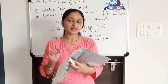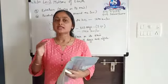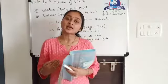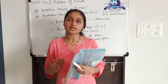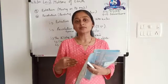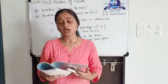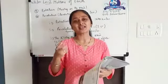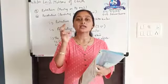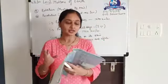Thus, seasons in the northern and southern hemispheres are opposite. When it is summer in the northern hemisphere, it is winter in the southern hemisphere. When the sun's rays fall vertically, days become longer.